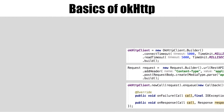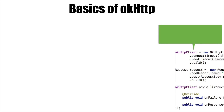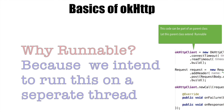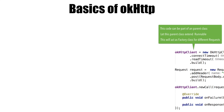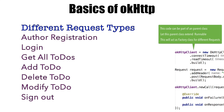If you think about it, the very first part — the OkHttp client — this code can be part of a single parent class. This parent class can extend Runnable and then act as a factory class for different request types. When I say request types, it is register, author, add to-do, remove, delete — these kinds of different requests that we will be making from our app. All of those requests will be extending this particular parent class.